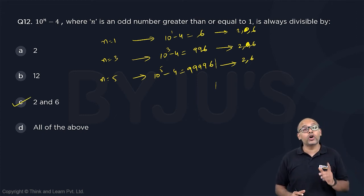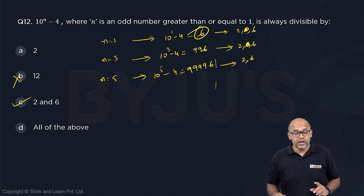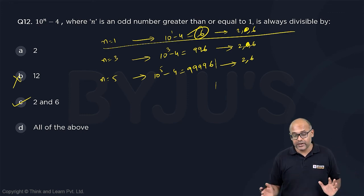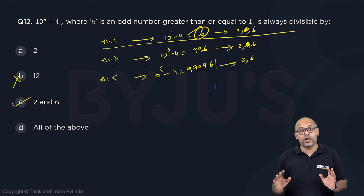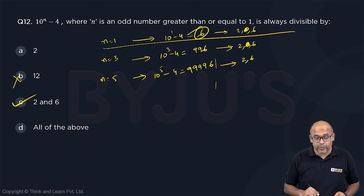Okay it has to be 2 and 6, not all of the above, because the first number 6 is not divisible by 12. That's a trap. So if you forget the first part then you will see that 12 is there everywhere, because 12 is there everywhere for sure except in the first number. That is a trap, therefore the answer will be option C.